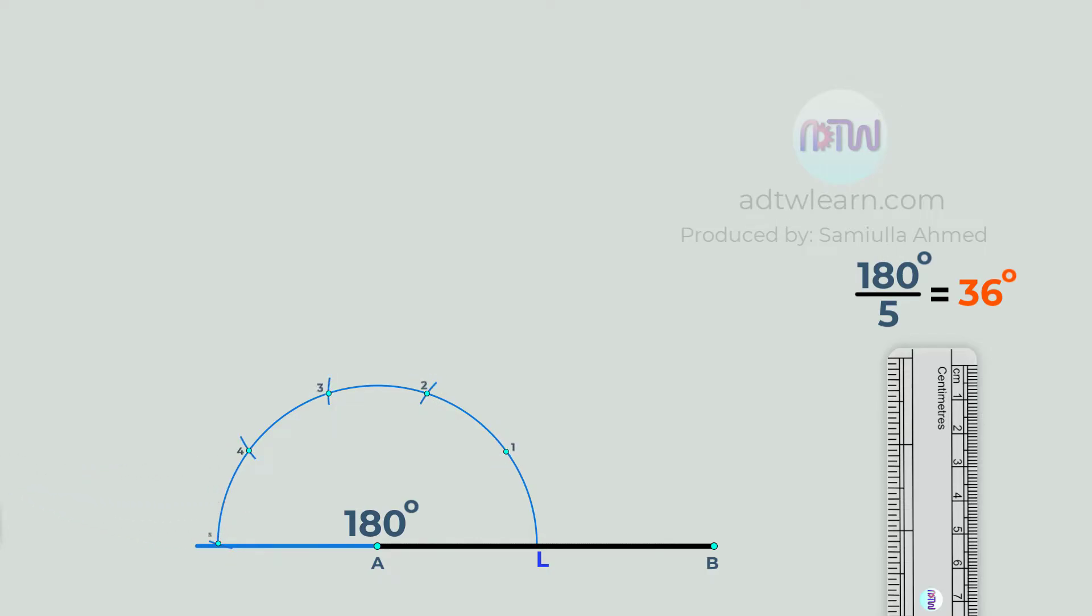These are our 5 points. After this, using point A as a center, draw lines passing through these points.